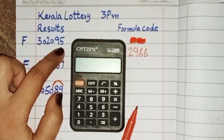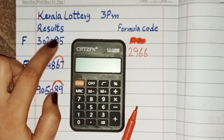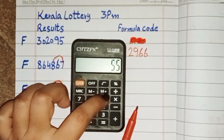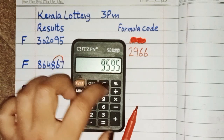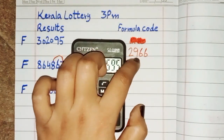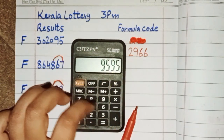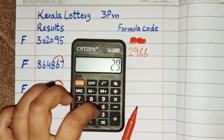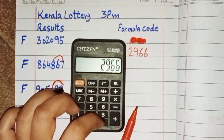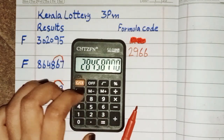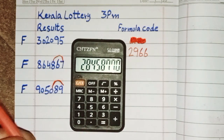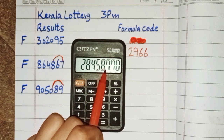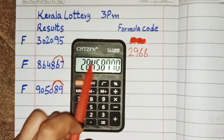Put this last two digit number on the calculator — 9595 — and multiply with this formula code 29266, and just one time equal. After equal, you can check this. AC formula is passed into next draw of Kerala lottery 3 p.m.